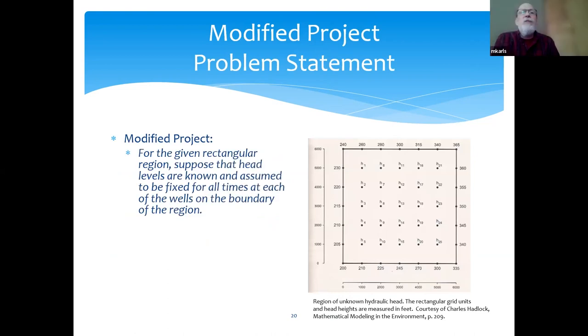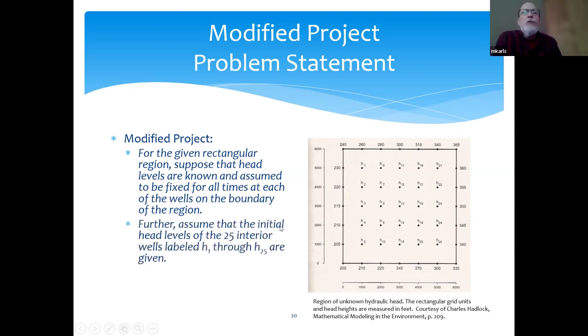Okay, so here's the modified project. For the given rectangular region on the right, suppose the head levels are known and assumed to be fixed for all times at each of the wells on the boundary of the region. So what I have here is the head level described at points along the boundary of this region here. This is where the wells are located. This is the x-coordinate and the y-coordinate. It's assumed that the initial head levels of the 25 interior wells labeled H1 through H25 are given. Use this information to find a solution to the problem 1 through 6.